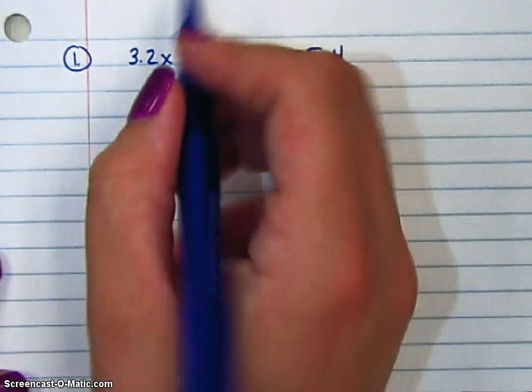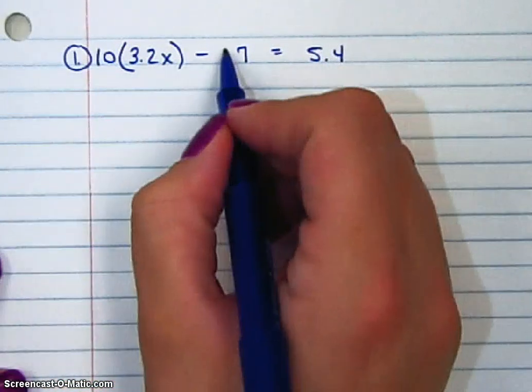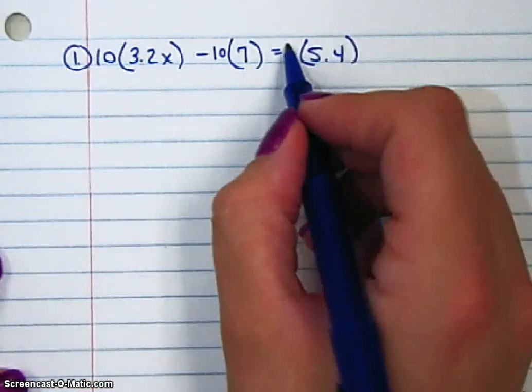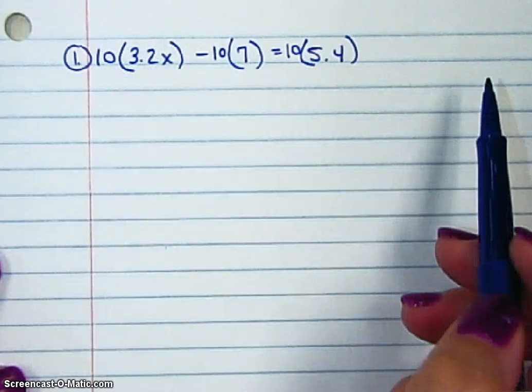To clear a decimal, we're going to multiply, in this case, by 10. Notice, I'm also multiplying that 7 by 10. If I do it to one number, I have to do it to all the numbers.